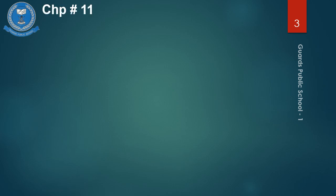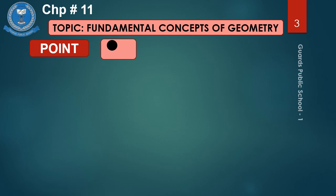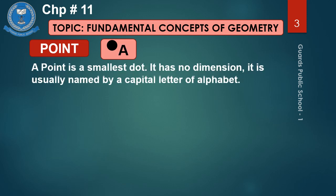Our topic is fundamental concepts of geometry. In this topic we are going to study the main concepts of geometry which will help you in your further studies. So number 1 is point. Here you see the diagram of point — point A. A point is the smallest dot. It has no dimension. It is usually named by a capital letter of the alphabet.